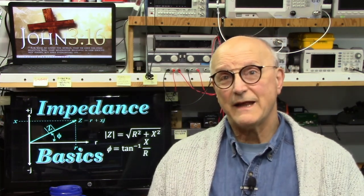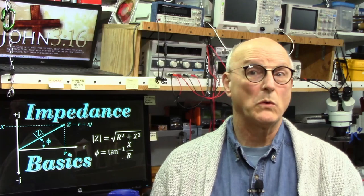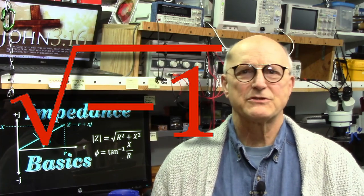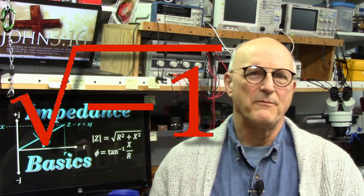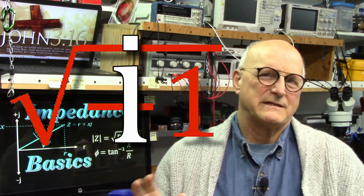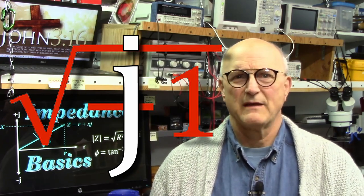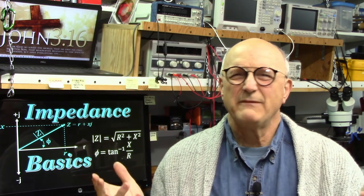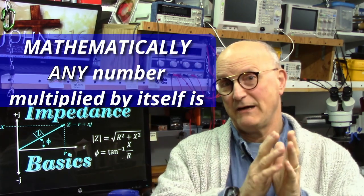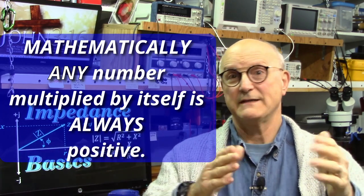Let's begin as always with laying some foundations. One of the very basic things that we have to be aware of is the totally impossible but inescapable entity in this whole business — that is the square root of minus 1. In the math world, this is represented by the lower case i, but because the electronics world already assigned i to current, we use the letter j to represent the square root of minus 1. Mathematically speaking, if I take any number and multiply it by itself, the result is always a positive number.